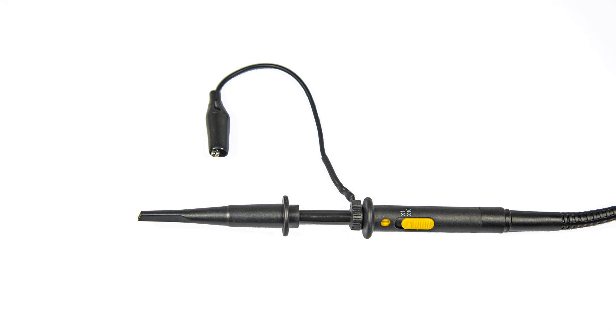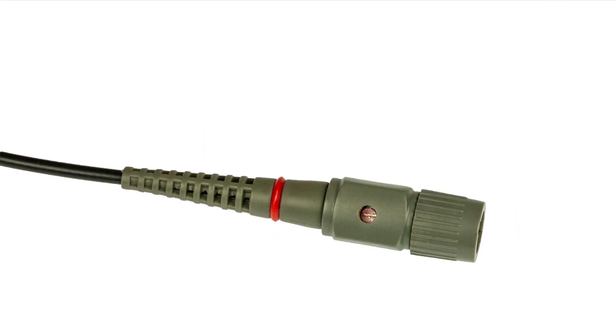The adjuster is a small screw which can be trimmed. It's found either at the tip of the probe as we see here, or at the point where the probe connects to the scope as we see on this probe.